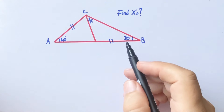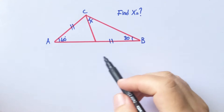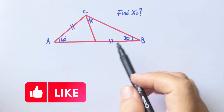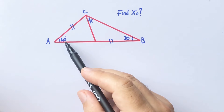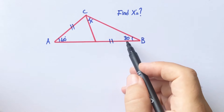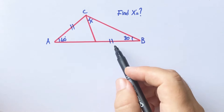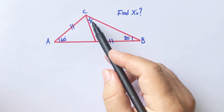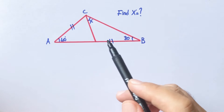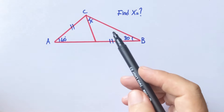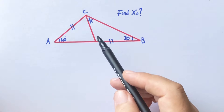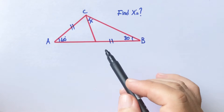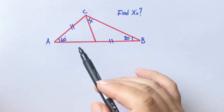Hello everyone. In this video I am going to cover one triangle question. Here is 40 degrees, here is 30 degrees, these two lengths are equal, and X is asked. First of all, we know that every triangle has a circumcircle.